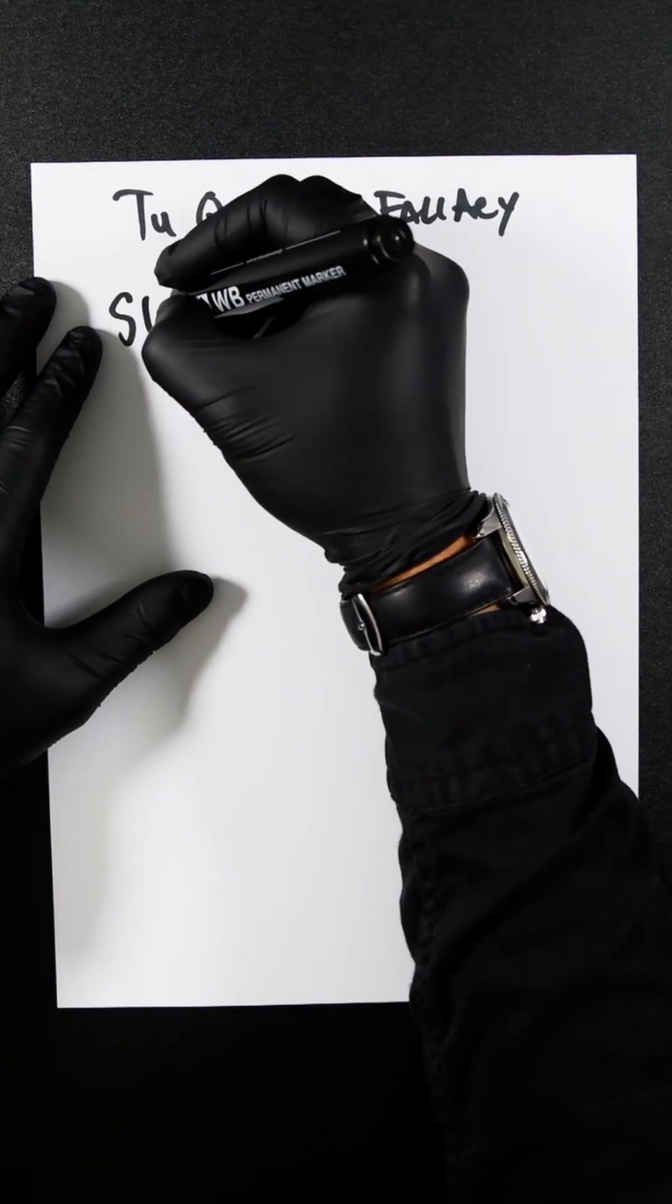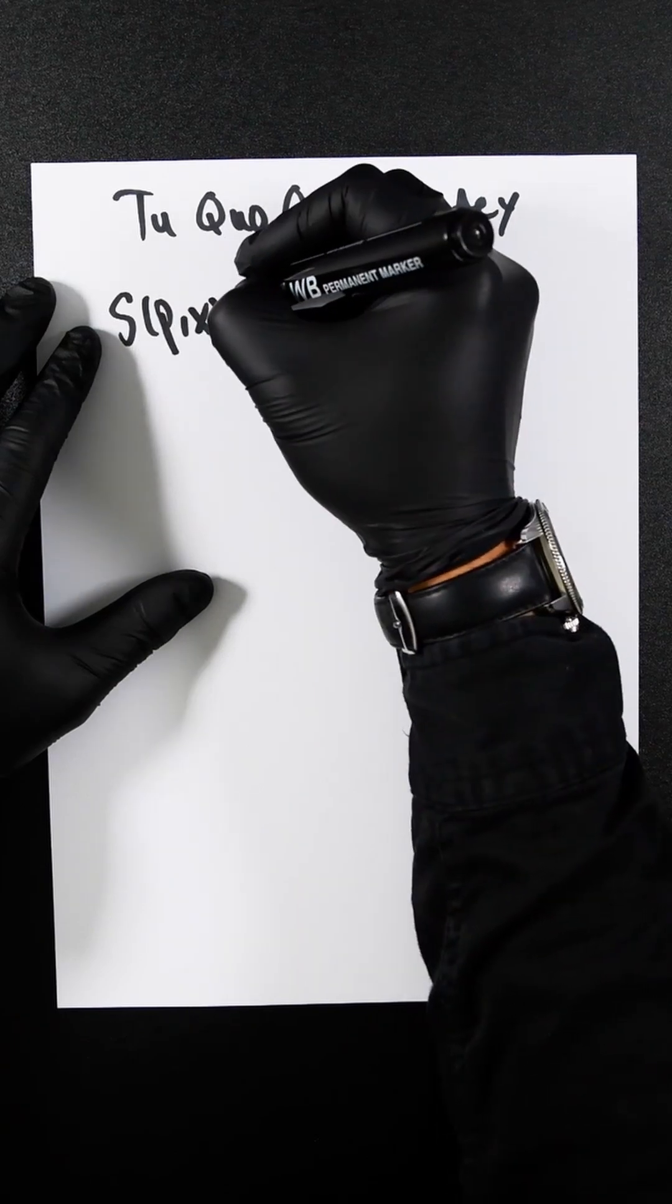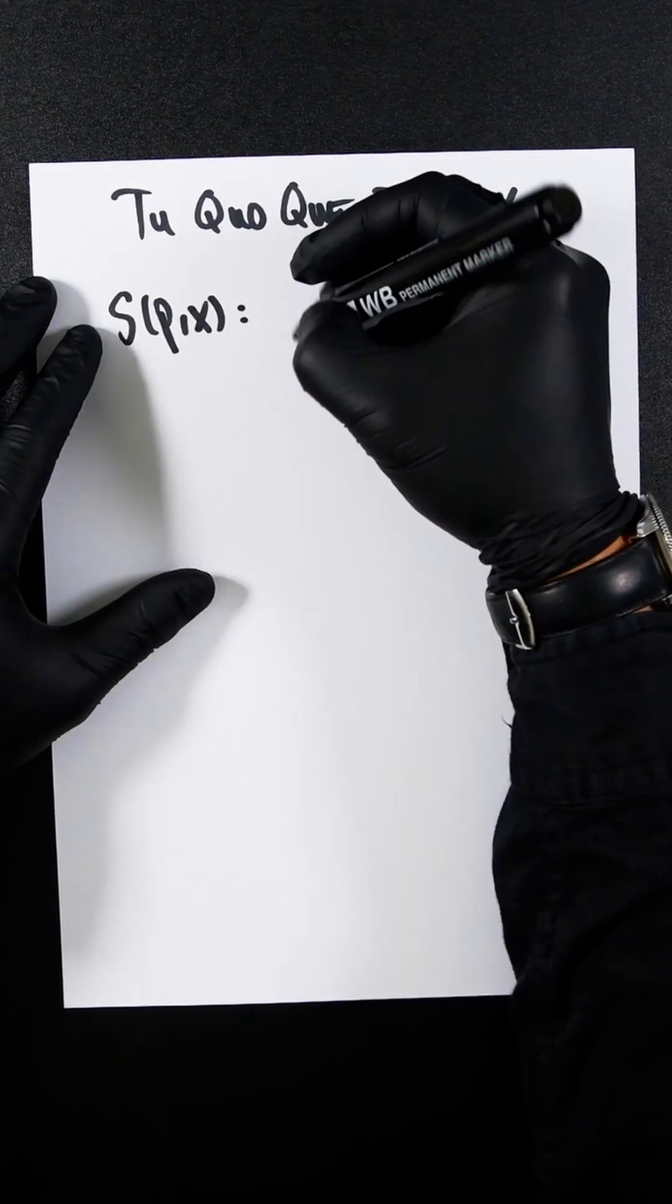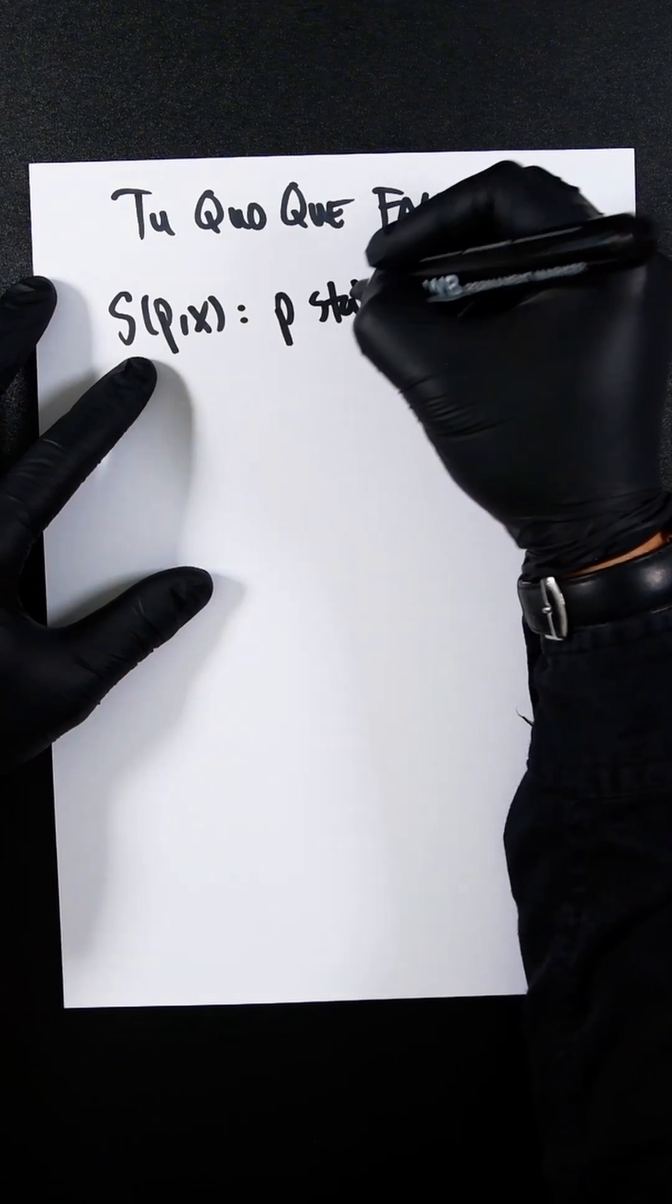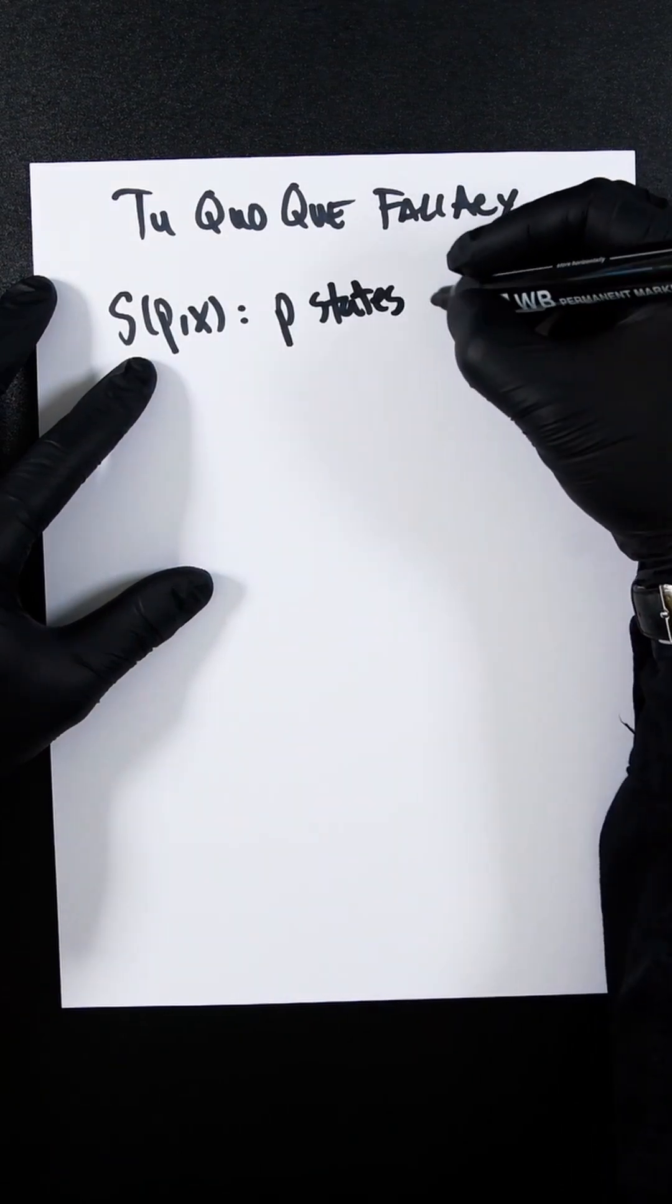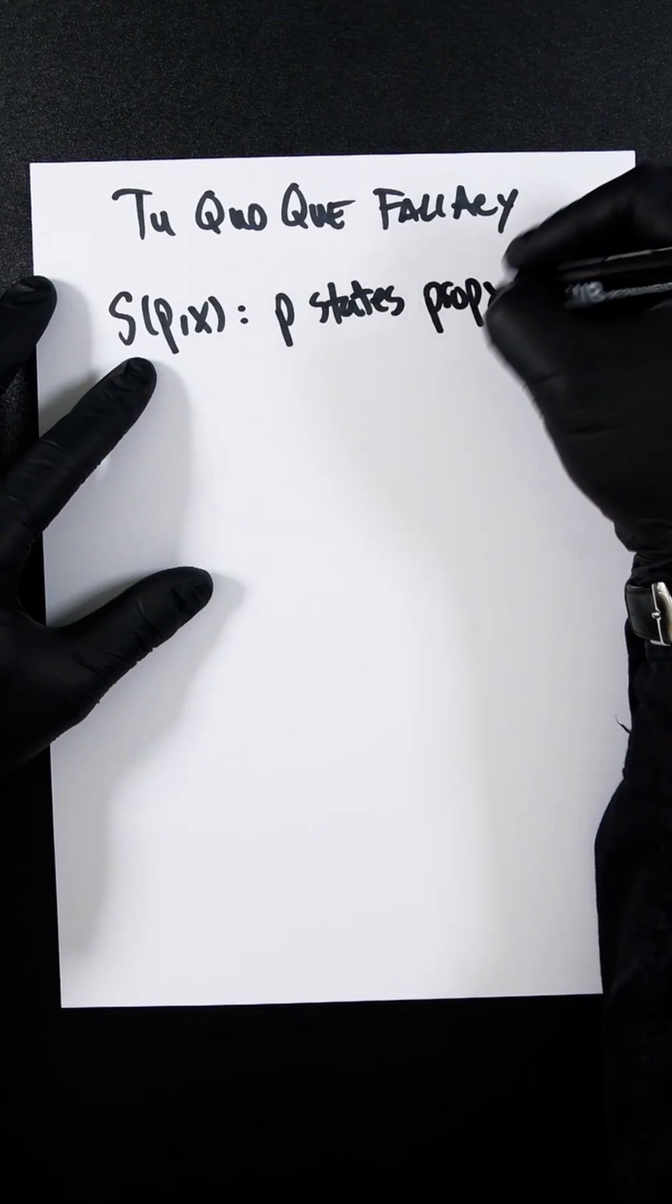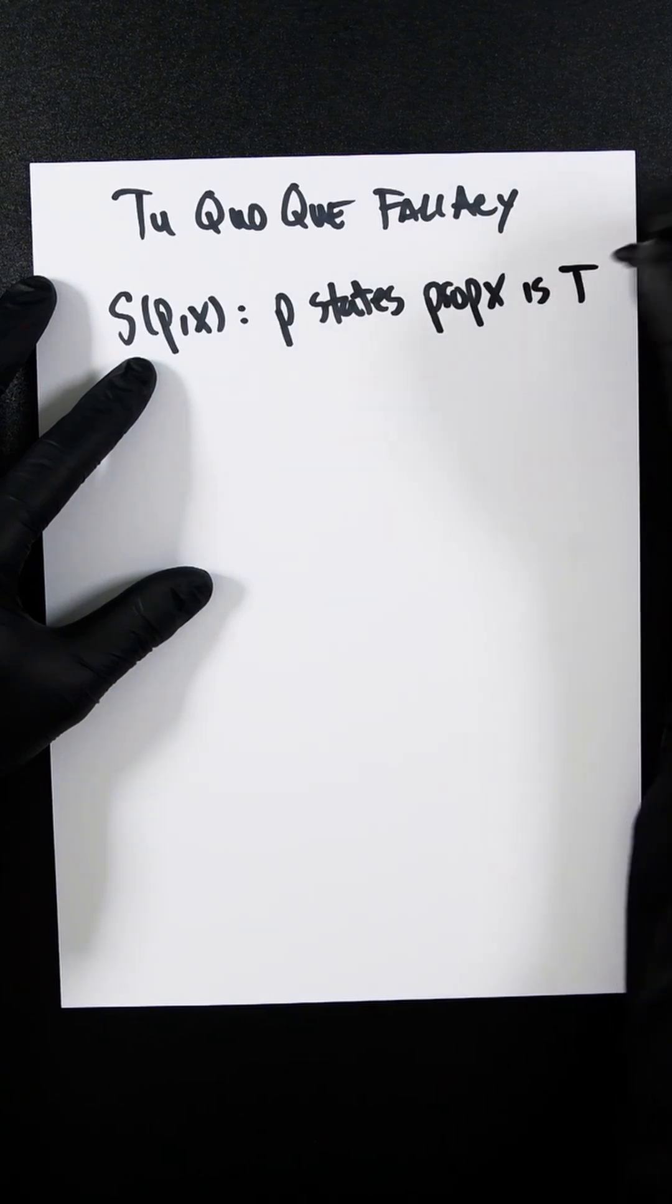So let's now set up our first bits of predicate logic. This is my first predicate where person P states the proposition X is true.